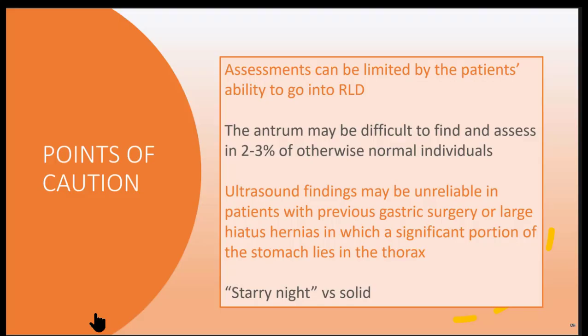My points of caution: your assessment can be very limited if you can't get the patient into right lateral decubitus position. The antrum can be difficult to find and assess in about two to three percent of normal individuals — especially in patients with empty stomachs, where the antrum is so flat it just disappears. Ultrasound findings may be unreliable in patients who have pathology such as previous gastric surgery, large hiatus hernias, or herniation into the chest. And sometimes I find it hard to distinguish between the liquid starry night and the homogenous solid.